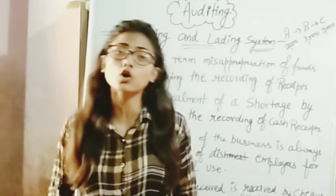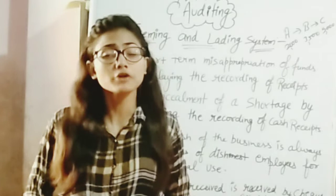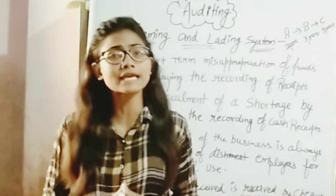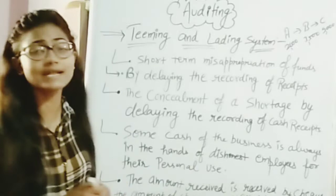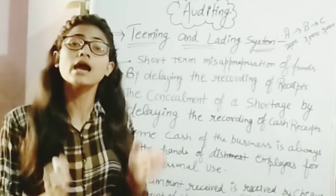This is a type of misappropriation of funds. Some employees are very honest, but there are some people who commit fraud and get black money from inside the organization. The teaming and lading system involves short-term misappropriation of funds.